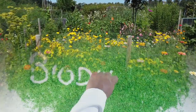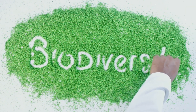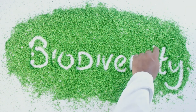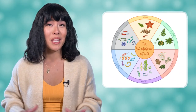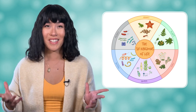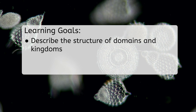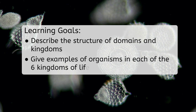So in this unit and the next, we'll be looking at all the different types of living things in the world. Biodiversity! Today, we'll take a quick look at the different kingdoms that represent the vast amount of biodiversity on Earth. But before we get started, let's look at our goals for this lesson. By the end, you'll be able to describe the structure of domains and kingdoms, and give examples of organisms in each of the six kingdoms of life.